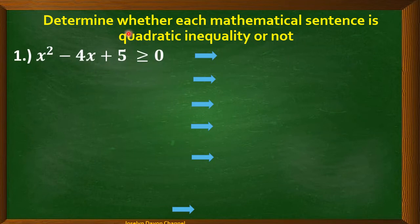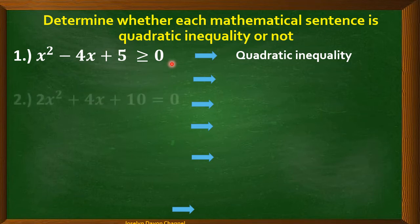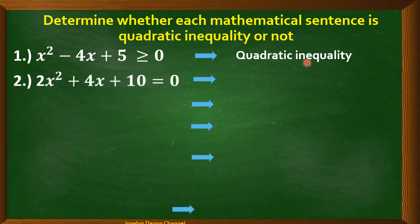We are going to determine whether each mathematical sentence is an example of quadratic inequality or not. Number 1: x² − 4x + 5 ≥ 0. This is an example of quadratic inequality. The highest degree is 2 and we have an inequality symbol.